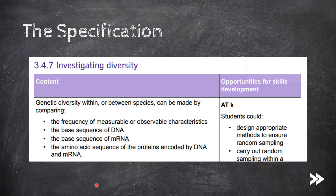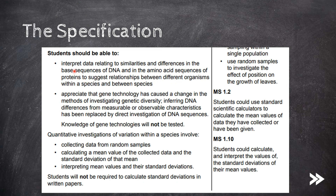We have to know that genetic diversity within or between species can be measured by comparing the frequency of measurable or observable characteristics, the base sequence of DNA, the base sequence of mRNA, as well as the amino acid sequence of proteins encoded by DNA and mRNA. We should be able to interpret data relating to similarities and differences in base sequences of DNA and amino acid sequences of proteins, appreciate that gene technology has changed methods of investigating genetic diversity, and know how to collect and use data to investigate variation within a species.